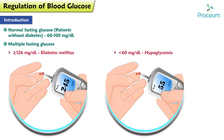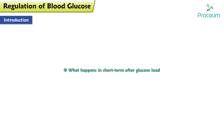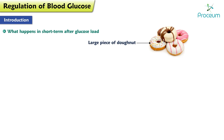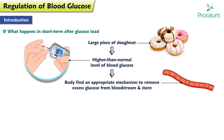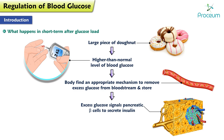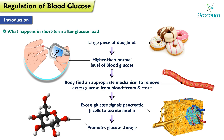What happens when our blood glucose levels increase, like after a big meal, or start to drop, for example when we fast? Let's look at what happens in the short term after a glucose load — say a large piece of donut. This results in a higher than normal level of blood glucose. The body must find an appropriate mechanism to remove the excess glucose from the bloodstream and store it somewhere else. Fortunately, the excess glucose signals the pancreatic beta cells to secrete insulin, which promotes glucose storage.